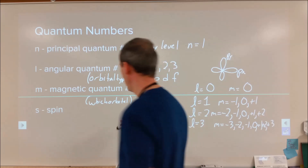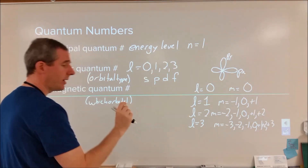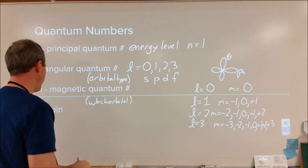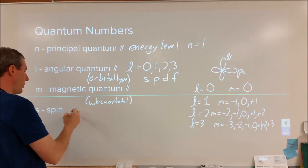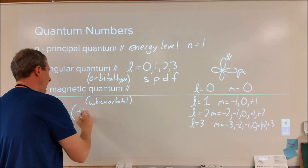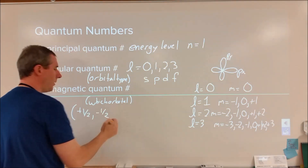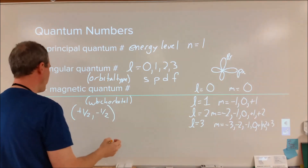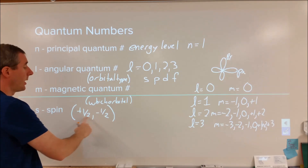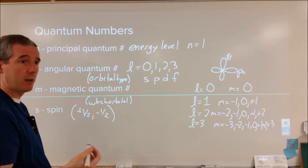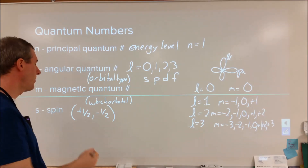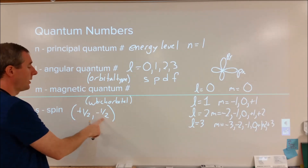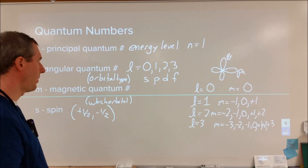Then there's one more quantum number: spin. Spin can be thought of as an intrinsic rotation of the electron — that's not 100% correct but it's a useful way to think of it. Spin can have two values: plus one-half or minus one-half — spinning one way or the other. We often call this spin up and spin down. If we represent an electron as an arrow in an orbital filling diagram, spin up is an arrow pointing up, and spin down is an arrow pointing down.